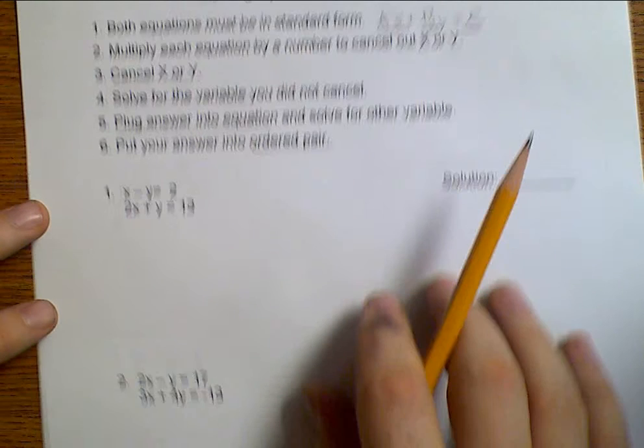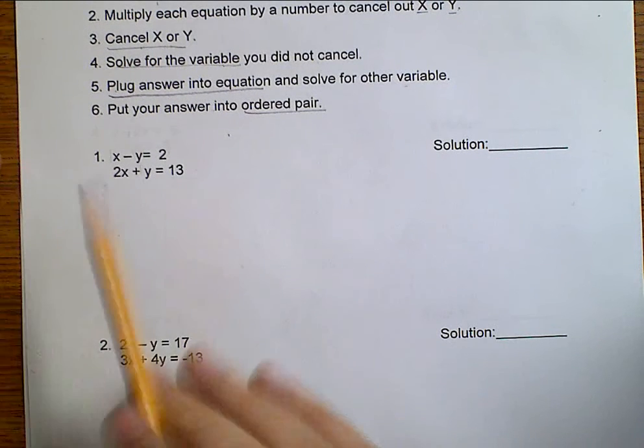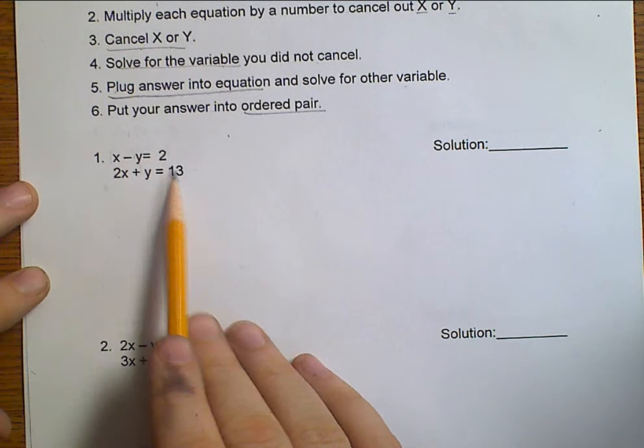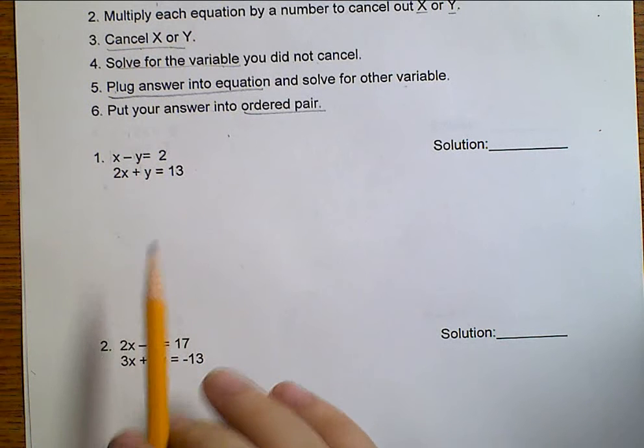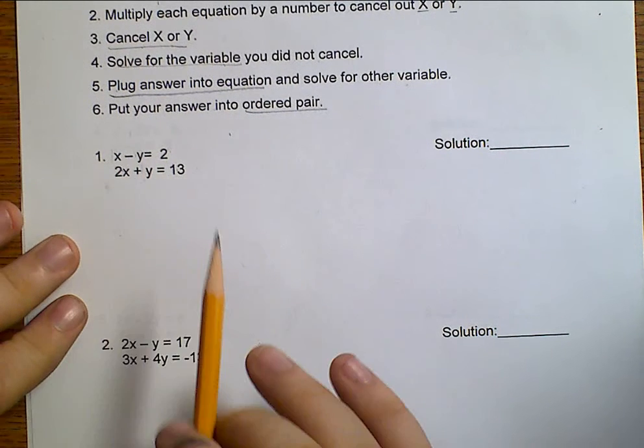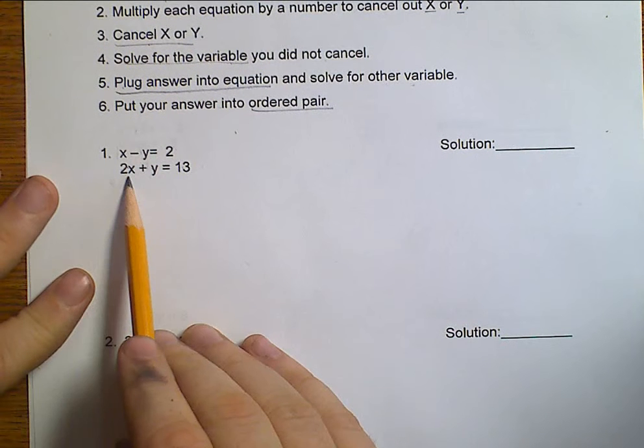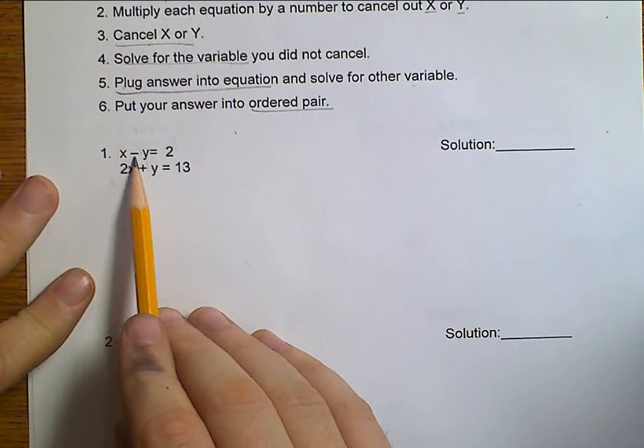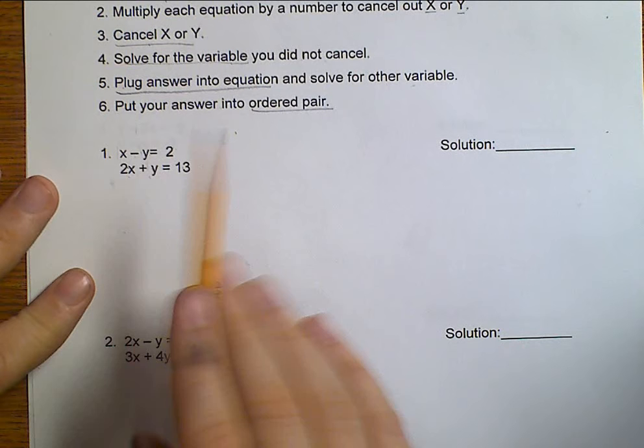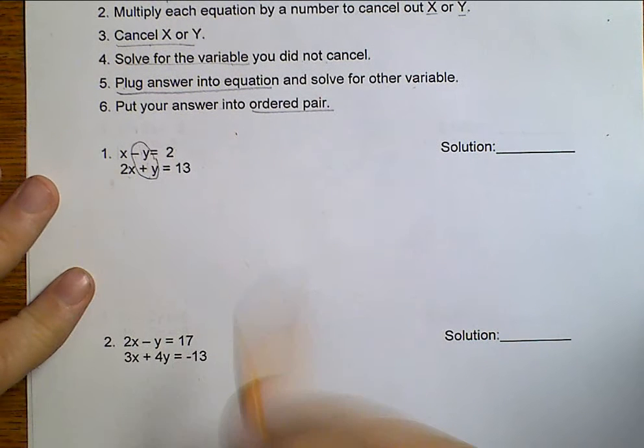So, let's go ahead and talk about number one. First thing is, are these in standard form? Yes, they are. We've got X, then Y, then a number. X, then Y, then a number. Excellent. Now, in order to cancel, I need either my X's to match or my Y's to match. Well, this is 1X and 2X. Those are not the same. This is negative 1Y and positive Y. Well, it's still 1 and 1, so these actually already match.